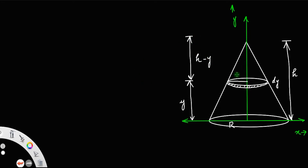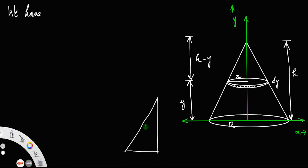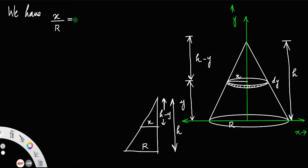Let the radius of the circular disk be x. From the triangle, considering these two similar triangles — the small triangle with base x and height h minus y, and the whole triangle with base r and height h — applying the similarity property, we have x over r equals (h minus y) over h, which implies x equals r(h minus y) divided by h.